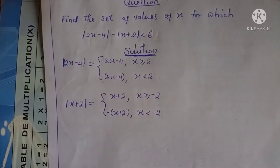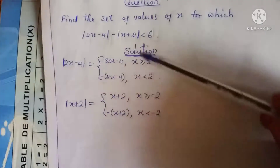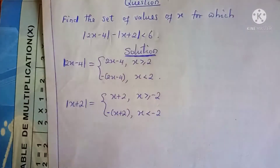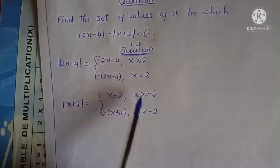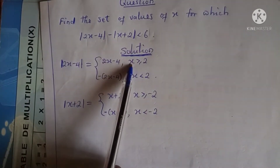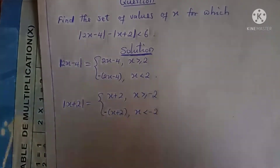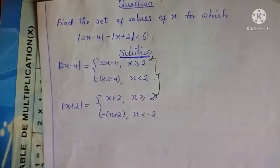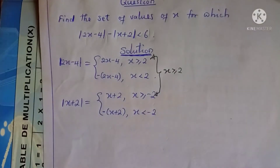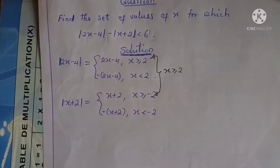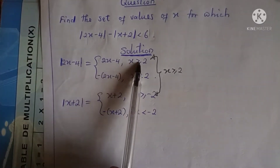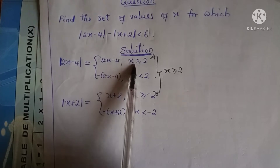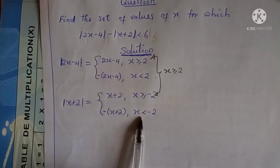Now I will look for the intersection of these pairs of intervals. When you look at the first two intervals — x greater than or equal to 2, and x greater than or equal to negative 2 — the intersection is just the set x greater than or equal to 2. If you take the first branch and the last branch, the intersection is an empty set, because you cannot find a value which is greater than or equal to 2 and at the same time less than negative 2.